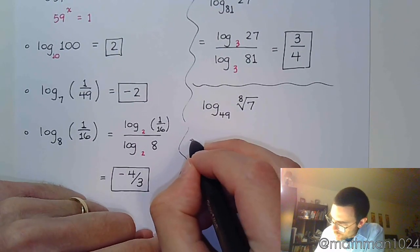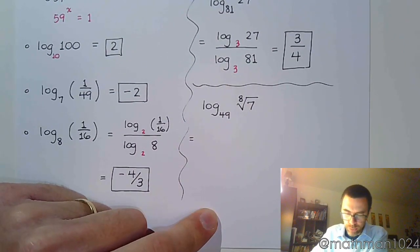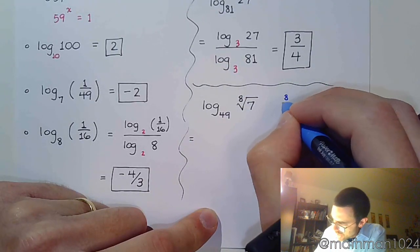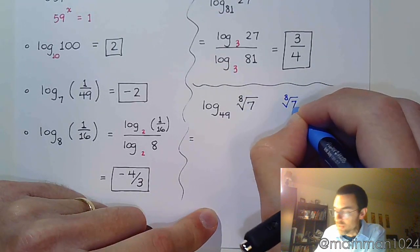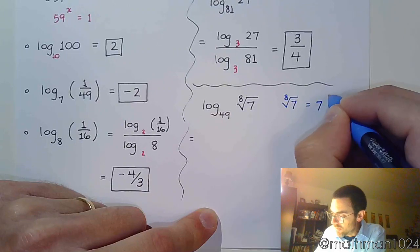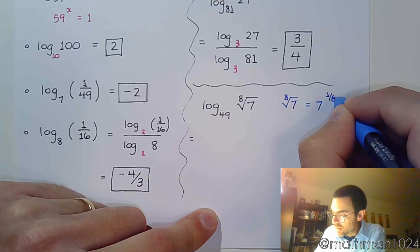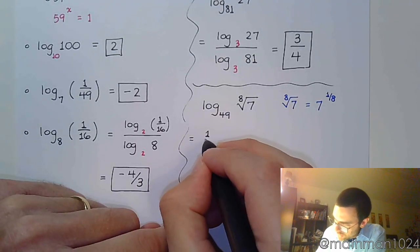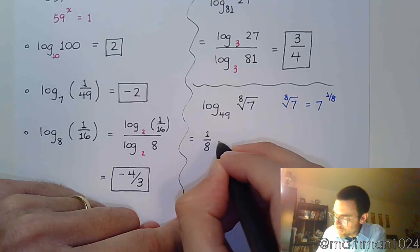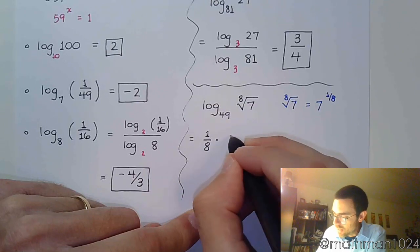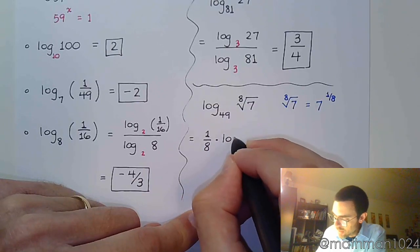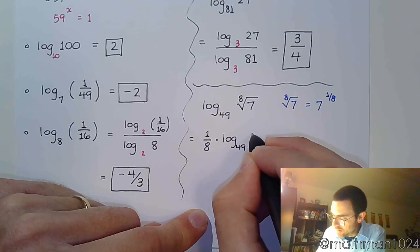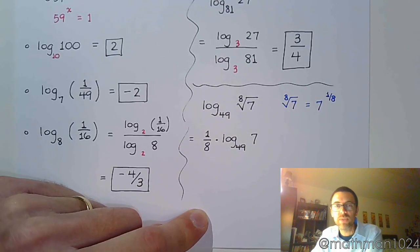So, I suggest that we write this. And, again, remember this. That having the 8th root of 7 means that you're saying 7 to the 1/8th. Which means I can pull that power out in front like this. So, the 1/8th power goes in front. So, 1/8th times log base 49 of 7.